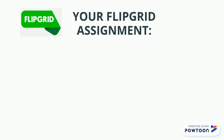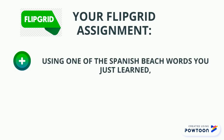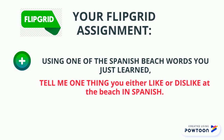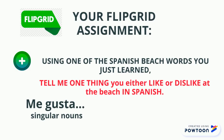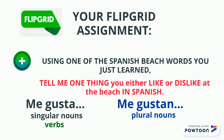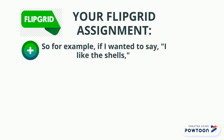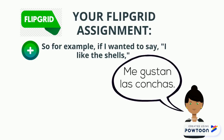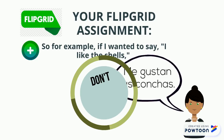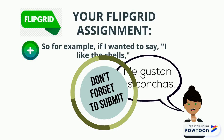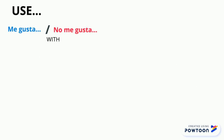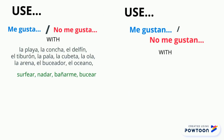We're getting ready for your Flipgrid assignment. You guys have been talking about me gusta for the last couple of weeks, so we're going to continue doing that by using one of the Spanish beach words you just learned. Your assignment is to tell me one thing you either like or dislike at the beach in Spanish. Remember, you use me gusta with singular nouns — people, places, or things that are just one — or with verbs. And you use me gustan with plural nouns, which are two or more people, places, or things. For example, if I wanted to say I like the shells, I would say me gustan las conchas. Don't forget to submit your Flipgrid when you're done. Use me gusta or no me gusta with the singular words, and me gustan or no me gustan with the plural words.